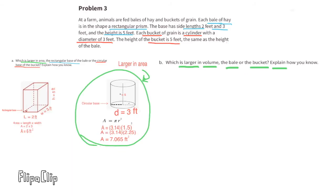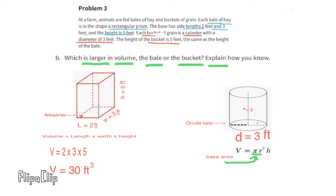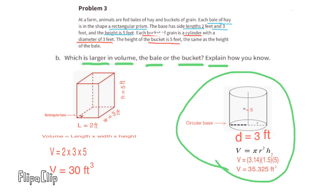B. Which is larger in volume, the bale or the bucket? Explain how you know. To find the volume of the bale, we multiply length times width times height. The volume equals 2 times 3 times 5. 2 times 3 is 6, 6 times 5 is 30. The volume of the bale is 30 feet cubed. To find the volume of the bucket, we multiply pi times r squared times height, 3.14 times r squared times height. Since the diameter is 3, the radius is 1.5. So 3.14 times 1.5 squared times 5. The volume of the bucket is approximately 35 feet cubed. The bucket has the larger volume.